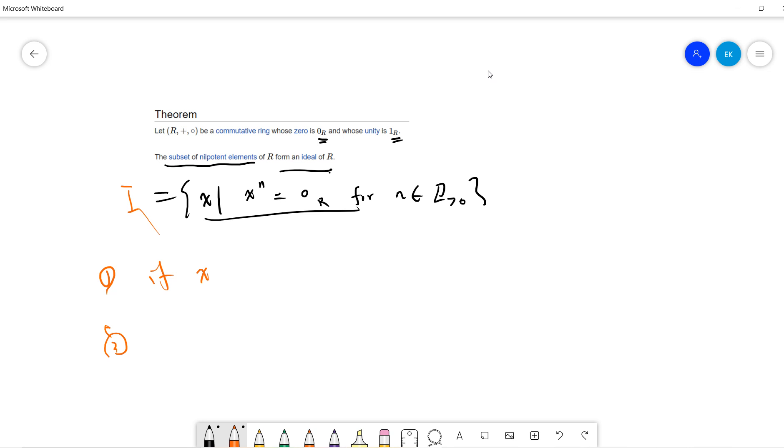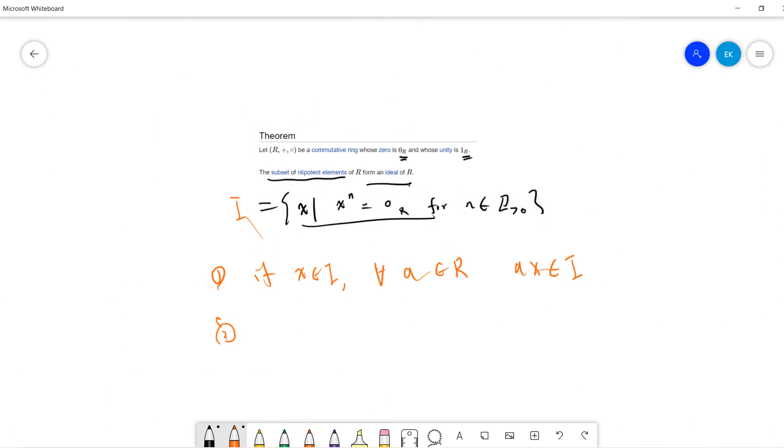First, if x belongs to I and for any a belongs to R, I want to show that ax belongs to I. This is the first thing I want to prove.